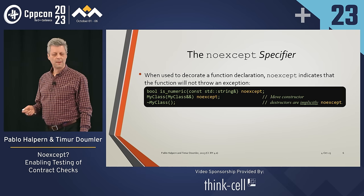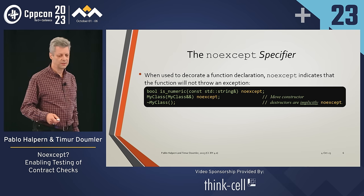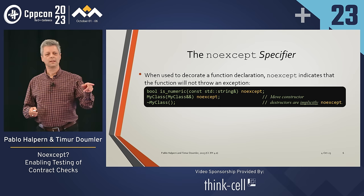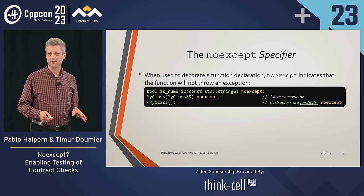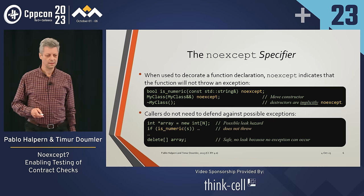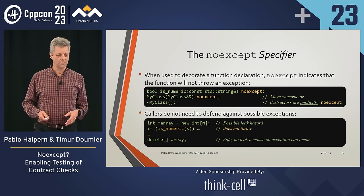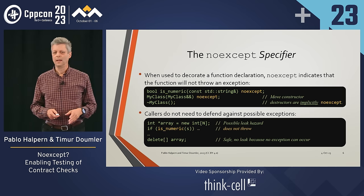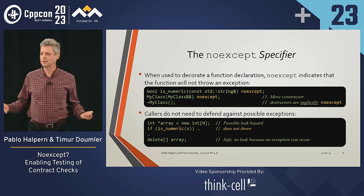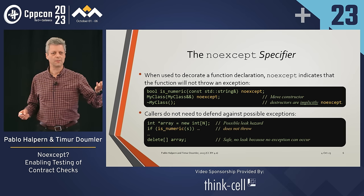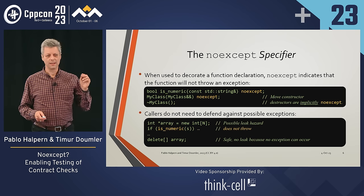The move constructor for a class is noexcept — that's the most common use of noexcept. The destructor is also noexcept; there's no noexcept decorator on the destructor because destructors are automatically noexcept unless you tell the compiler otherwise. Callers don't have to defend against exceptions when calling a noexcept function. For example, if we allocate an array of integers and call the isNumeric function, we don't have to worry about a dangling pointer because the function has been declared noexcept.